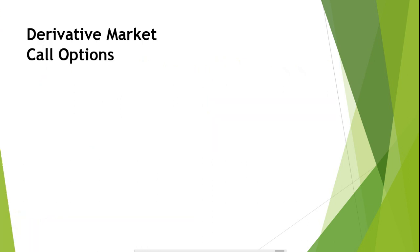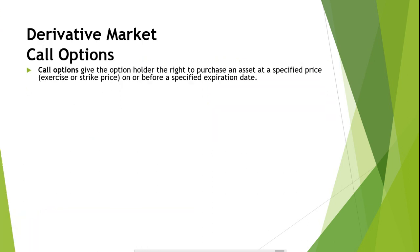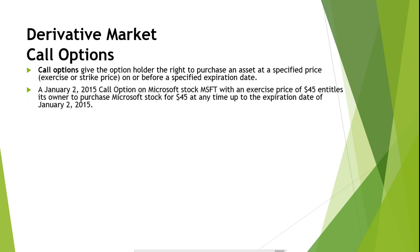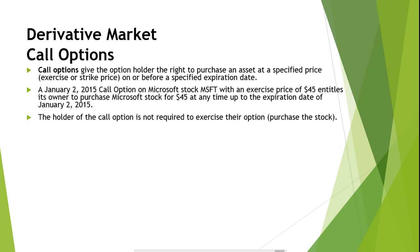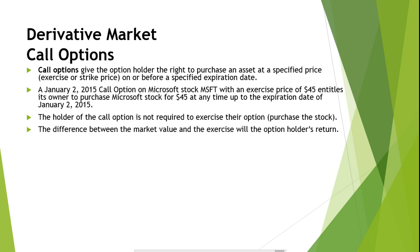Options. Call options give the option holder the right to purchase an asset at a specified price on or before a specified expiration date. A January 2, 2015 call option on Microsoft Stock with an exercise price of $45 entitles its owners to purchase Microsoft Stock for $45 at any time up to the expiration date of January 2, 2015. The holder of the call option is not required to exercise their option or purchase the stock. It only makes sense for the call option holder to exercise their option if the market value of the underlying stock exceeds the exercise price.